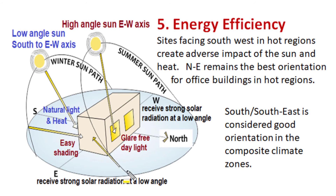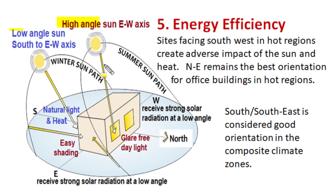The sun path trajectory is from east to west. In summer, the sun is at a high angle, slightly inclined towards the south, while in winter, the east-to-west sun path is at a low angle towards the south. In summer, openings in the northern face of a building receive glare-free daylight, and in winter, the southern face receives both natural light as well as heat.